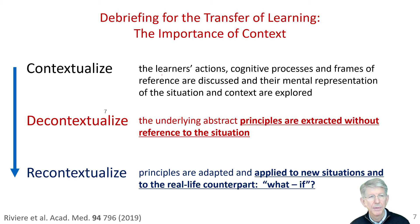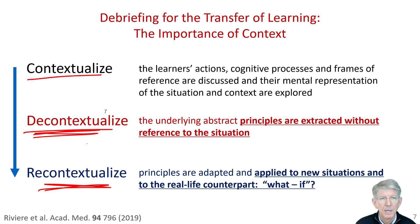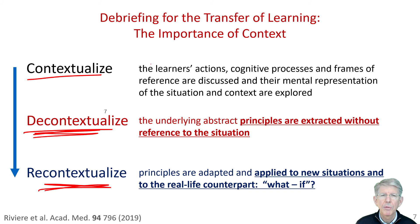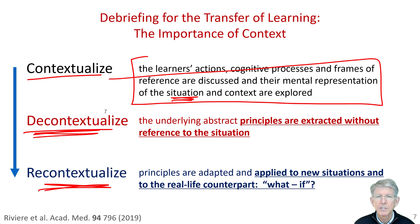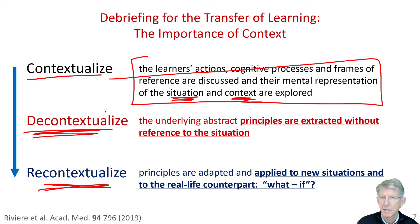One way to get around this is through a process of contextualizing what you've learned, then decontextualizing it — the critical part — and then recontextualizing it for a new circumstance. During the contextualization process, you discuss the actual mental representation of the solution, including the situation and the context. That's all real. So in discussing a situation, it's perfectly fine to discuss the context, the situation, and the details associated with what happened.